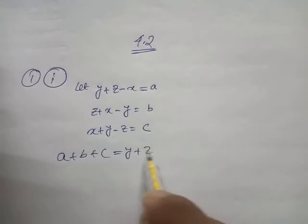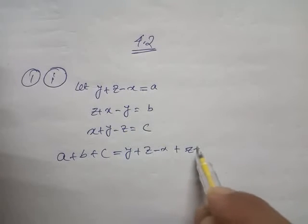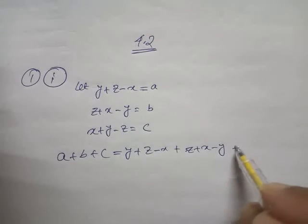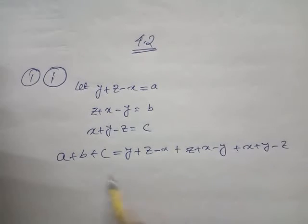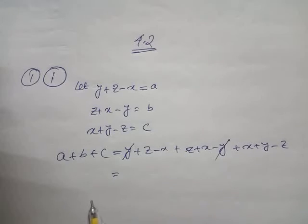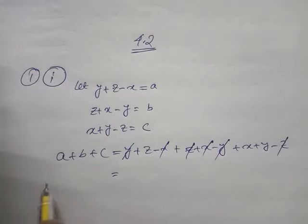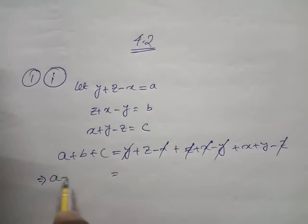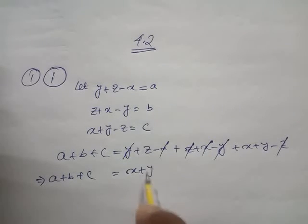So a plus b plus c equals y plus z minus x, plus z plus x minus y, plus x plus y minus z. Now look: y and y cancel, z and z cancel, then x and x cancel. So the remaining part is a plus b plus c equals x plus y plus z.